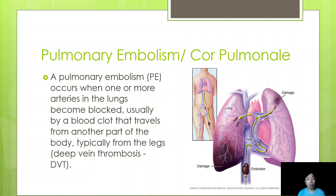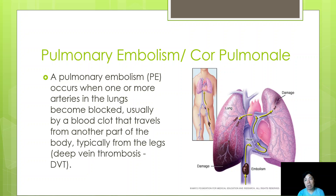Another lower respiratory tract disorder is pulmonary embolism. It occurs when one or more arteries in the lungs become blocked, usually by a blood clot that travels from another part of the body — typically the legs during deep vein thrombosis, or DVT. DVT commonly occurs after prolonged sitting, and the resulting clot can travel to the pulmonary arteries causing a blockage.